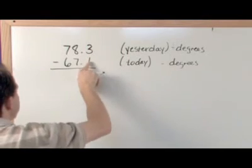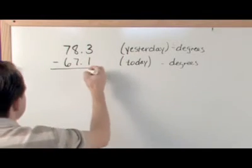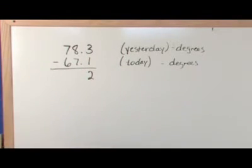Working in this column first, 3 minus 1, I think you can convince yourself is going to be 2. 3 minus 1 is going to be 2.